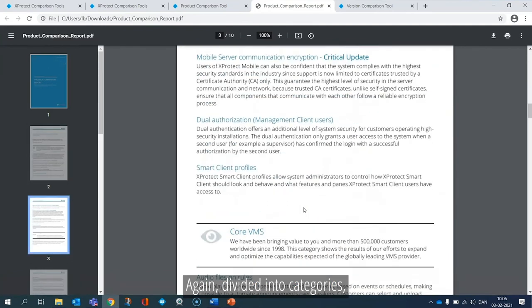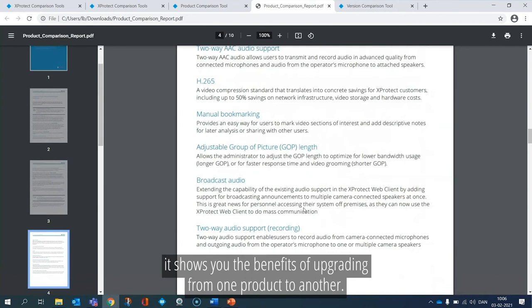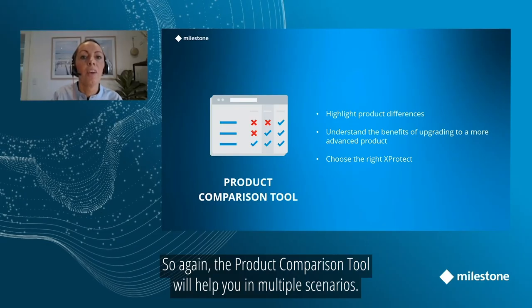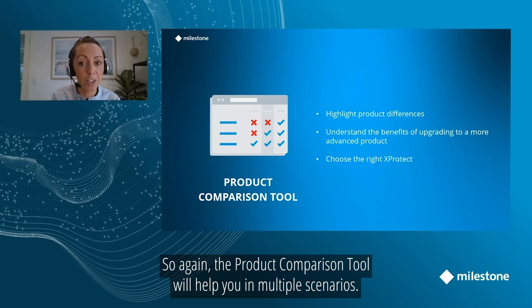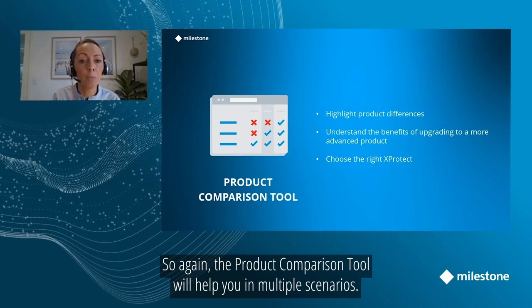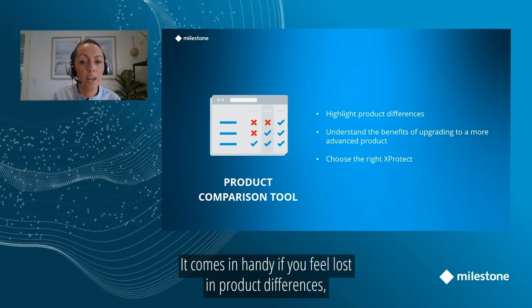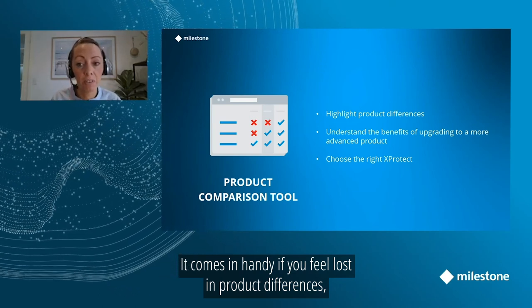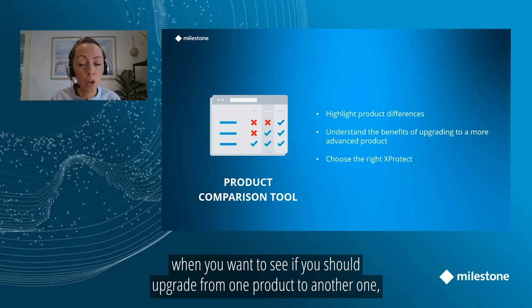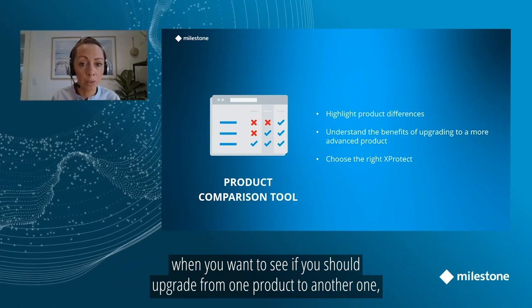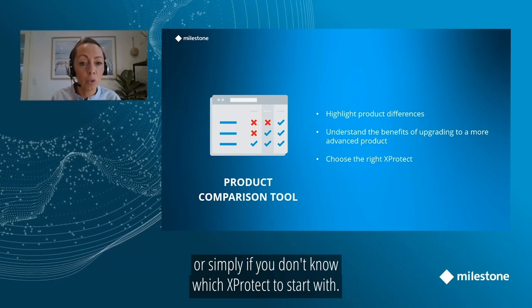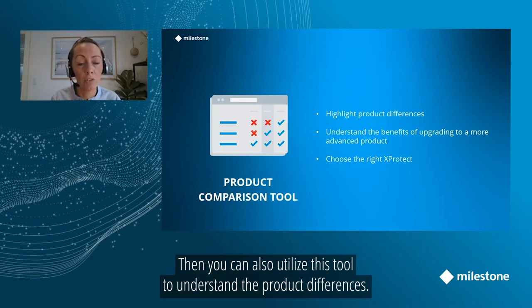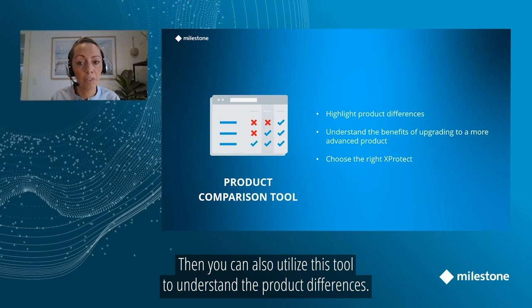It's divided into categories and shows you the benefits of upgrading from one product to another. To put it shortly, the product comparison tool will help you in multiple scenarios. It comes in handy if you feel lost in product differences, when you want to see if you should upgrade from one product to another, or simply if you don't know which Extrotech to start with — you can utilize this tool to understand the product differences.